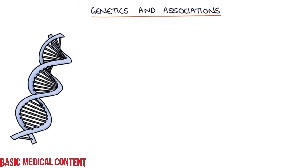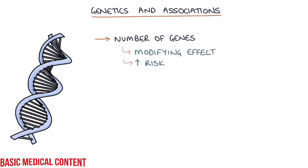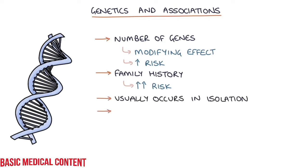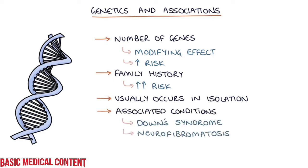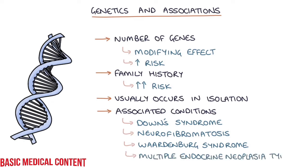There are a number of genes on various chromosomes that may have a modifying effect to increase the risk of Hirschsprung's disease. A family history greatly increases the risk, so always take a careful family history. Hirschsprung's disease usually occurs in isolation, but it is associated with a number of other syndromes, including Down syndrome, neurofibromatosis, Waardenburg syndrome — a genetic condition causing pale blue eyes, hearing loss, and patches of white hair and skin — and multiple endocrine neoplasia type 2.